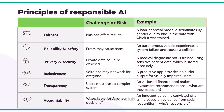Next we have transparency — users must trust a complex system, and trust is built when everything is transparent. For example, an AI-based financial tool making investment recommendations: how should you trust and invest your money based on that AI system? The data used is very important, as well as the organization building it. Transparency about what data was used is a very important part.